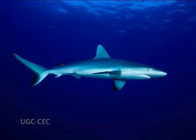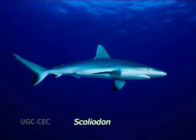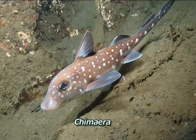Class 2: Chondrichthyes — in Greek, chondros means cartilage and ichthys means fish. These are mostly marine and carnivorous, and endoskeleton is made up of cartilage, so these are known as cartilaginous fishes. Skin contains minute placoid scales. Gill slits are not covered with operculum. Mouth and two nostrils are present on the ventral side. Males are with claspers. Examples include Scoliodon, Chimaera, etc.